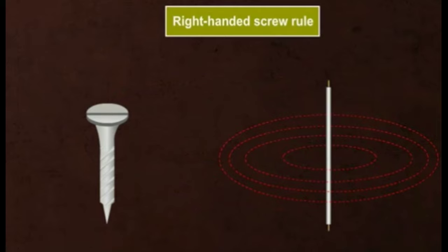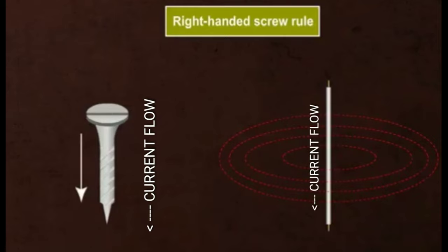Similarly, let's discuss Maxwell's screw rule or the right-handed screw rule, which states that when the screw is taken along the direction of current, then the rotating direction of screw will give the direction of the produced magnetic field.